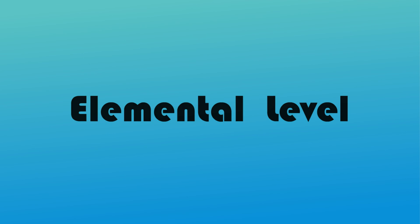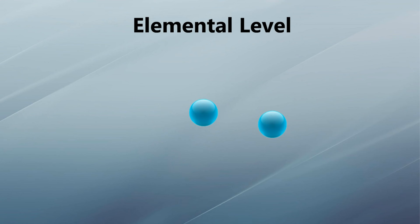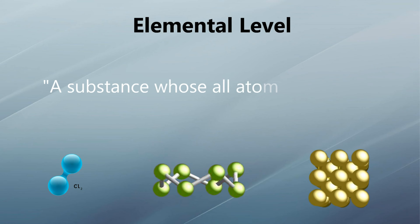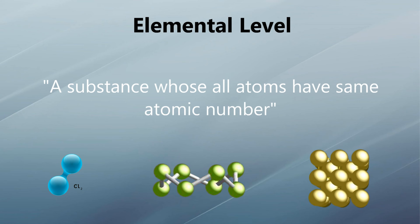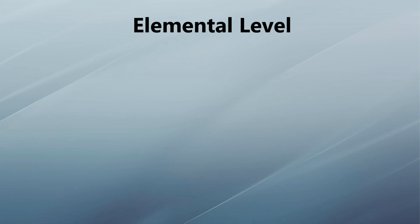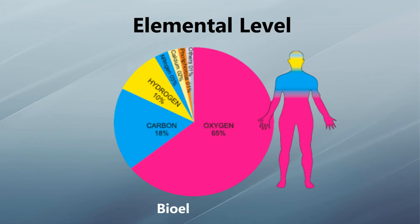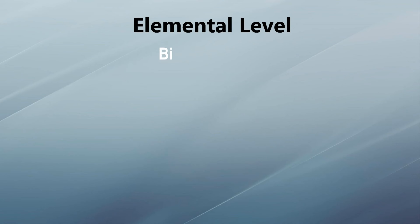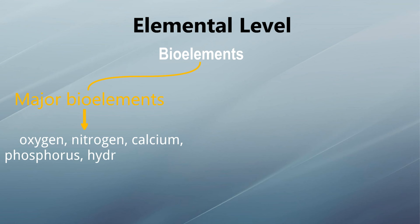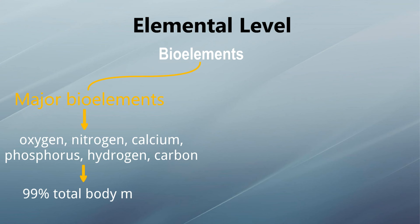At the elemental level, similar atoms combine and form an element. An element is defined as a substance whose all atoms have the same atomic number. Out of the 92 kinds of elements that occur in nature, 16 are called bio-elements. Out of these bio-elements, only six — oxygen, nitrogen, calcium, phosphorus, hydrogen, and carbon — make up 99% of the total mass.